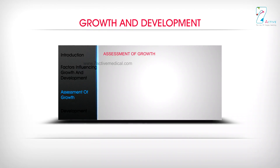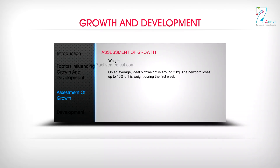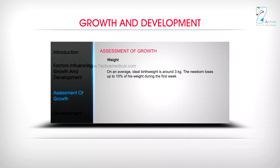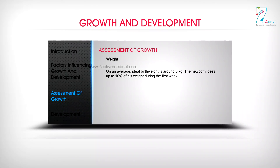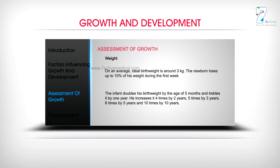Assessment of Growth — Weight: On an average, ideal birth weight is around 3 kg. The newborn loses up to 10% of his weight during the first week. The infant doubles his birth weight by the age of 5 months and triples it by 1 year. He increases it 4 times by 2 years, 5 times by 3 years, 6 times by 5 years, and 10 times by 10 years.